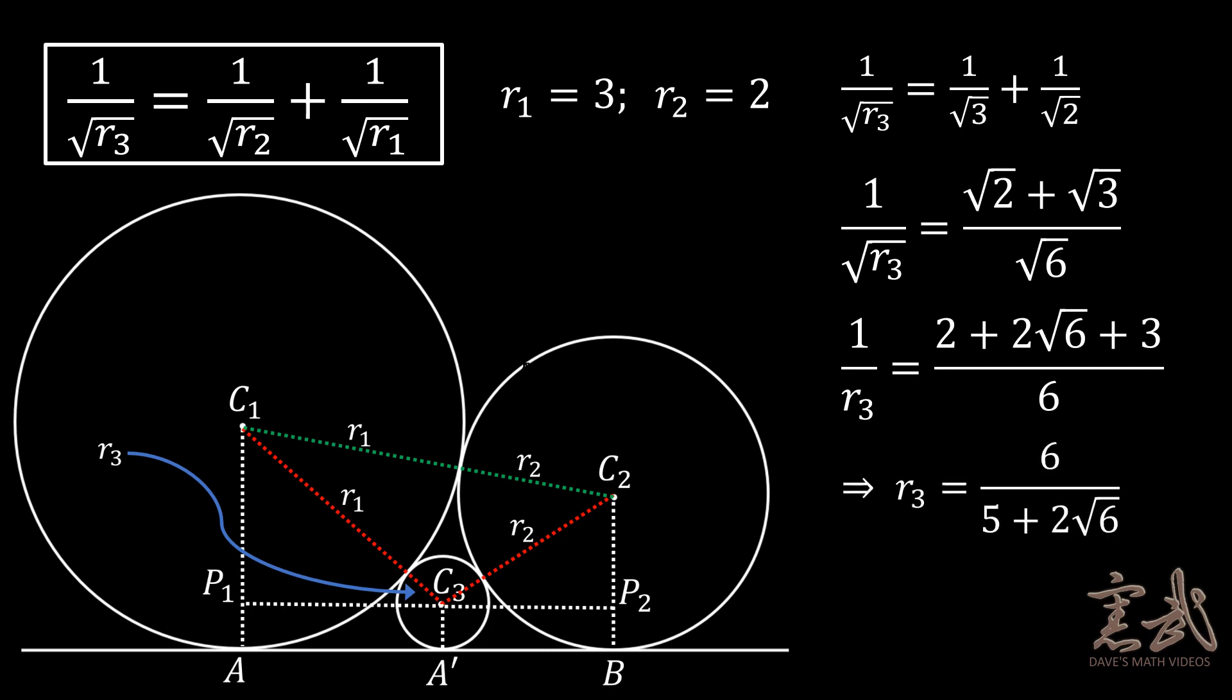And taking the reciprocal, we get R3 is equal to 6 over 5 plus 2 over the square root of 6.